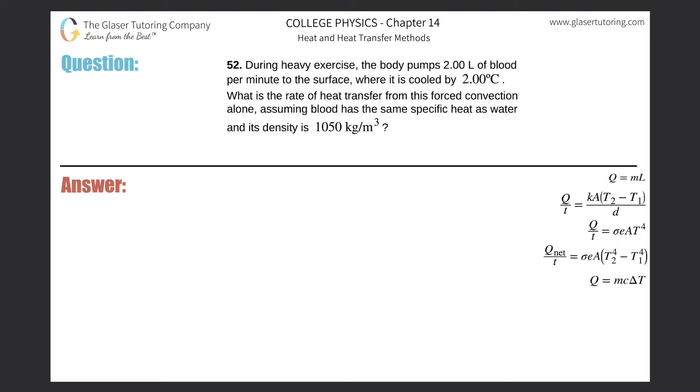Number 52. During heavy exercise, the body pumps two liters of blood per minute to the surface, where it is cooled by two degrees Celsius. What is the rate of heat transfer from this forced convection alone, assuming blood has the same specific heat as water, and the density is 1050 kilograms per cubic meter?